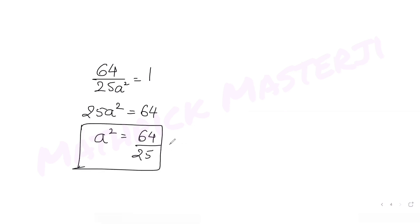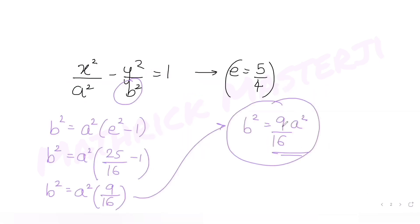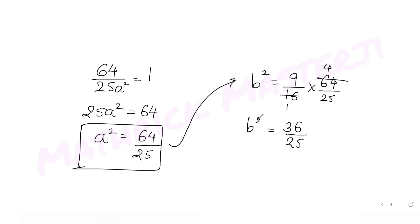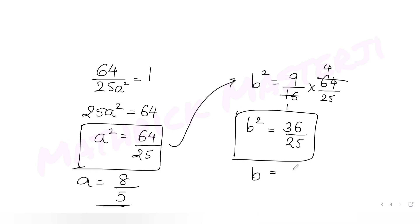With a² = 64/25, we find b² = (9/16) × (64/25) = 36/25. So a = 8/5 and b = 6/5. Now we have both a and b.